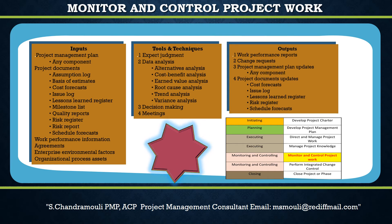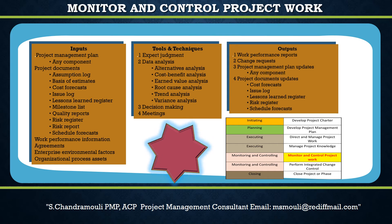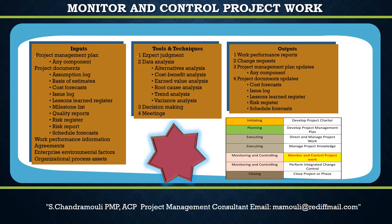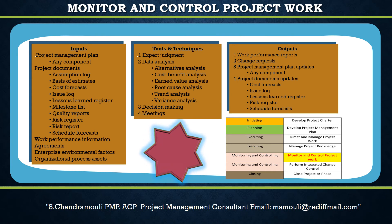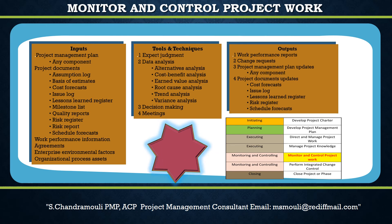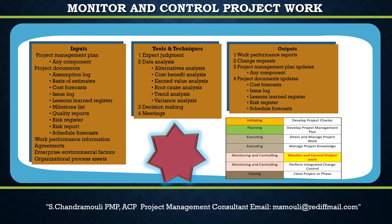For projects not using earned value management, variances against planned versus actual expenditures and forecasted final costs are provided. The next input is Validated Changes. Approved changes that result from the Perform Integrated Change Control process require validation to ensure the change was appropriately implemented. A validated change provides the needed data to confirm that the change was appropriately executed.